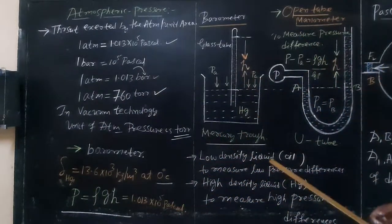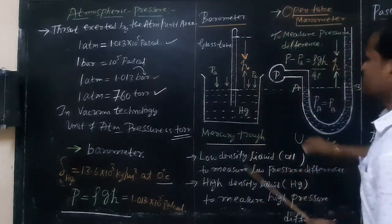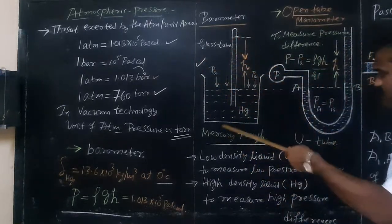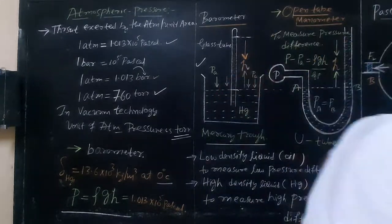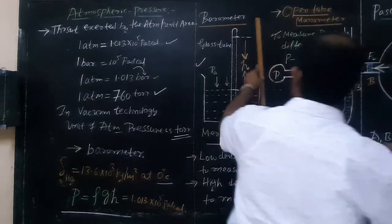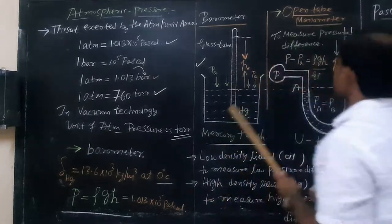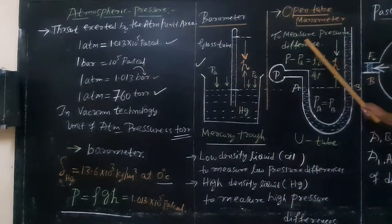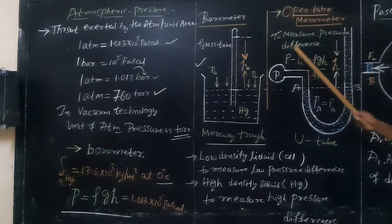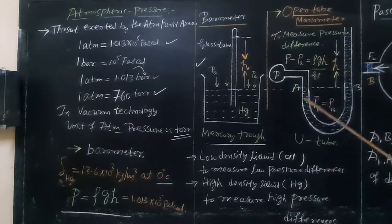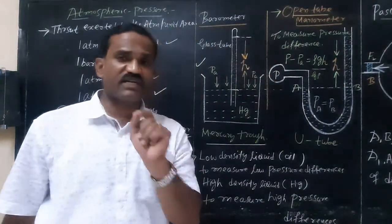Another device is the open tube manometer. This is a device to measure the pressure difference. What is the pressure at this point compared to another? The open tube manometer measures the pressure difference between liquids. Whatever pressure is to be determined, the liquid is filled in a bulb, and the U-tube is filled with a liquid or water.